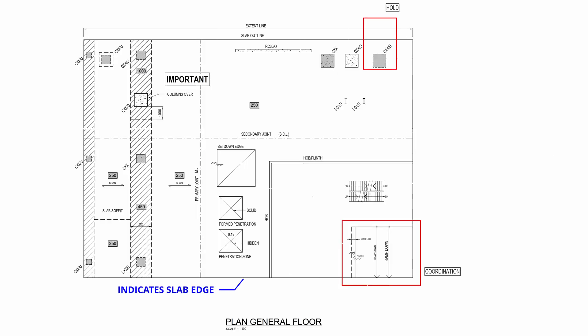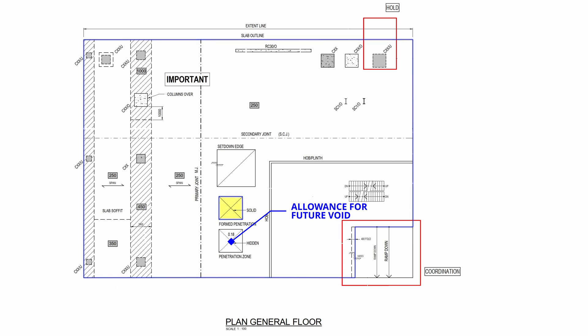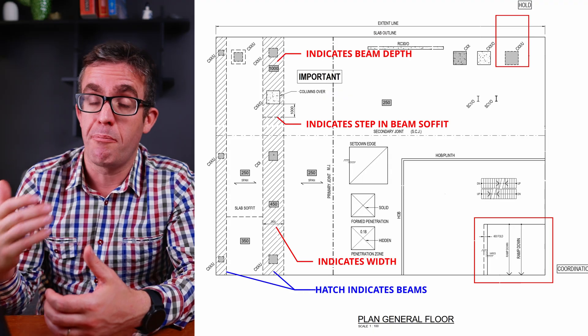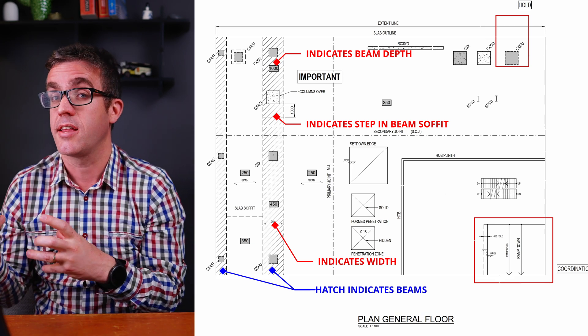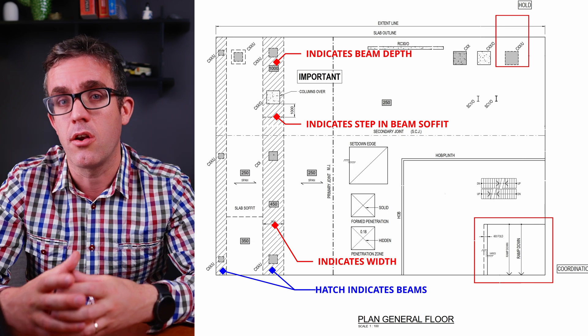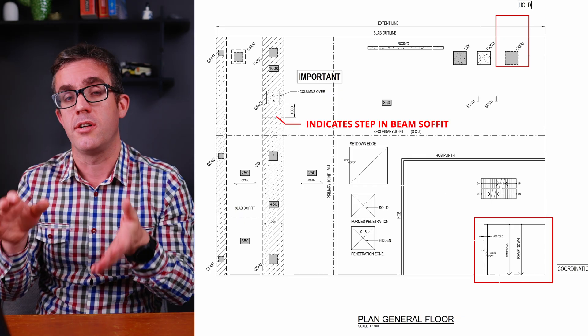For the suspended slab plan, you need to show the edge of the slab — the extent of the slab and any voids through it. Cross sections show where voids exist in the slab. The depth of slab structures or beam structures must be shown so formwork can be constructed correctly. Beams may be shown with hatching — this can be controversial, as some engineers prefer it and some don't, but it can provide clarity when there are many beams.